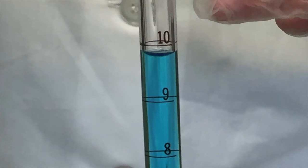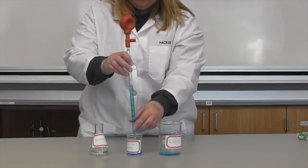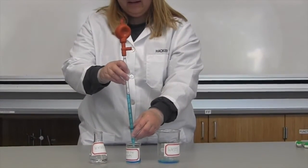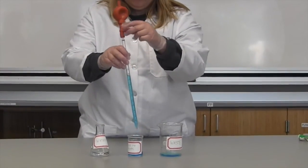Currently, it's at about 9.8 milliliters. Then, we move our pipette, keeping it vertical, to our new container and use the eject valve to dispense the liquid.